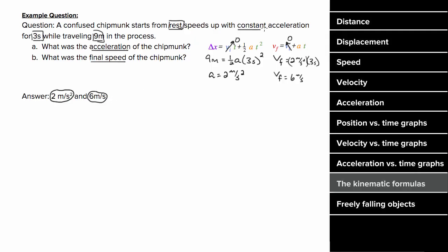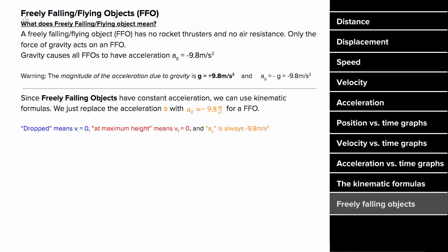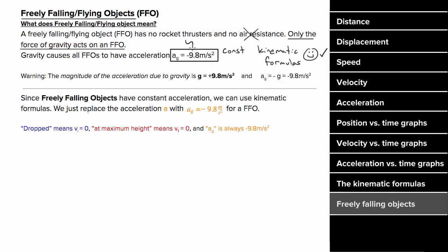A freely falling or flying object is any object that has been dropped or thrown through the air with only the force of gravity acting upon it, meaning we typically ignore air resistance unless otherwise stated. We care about these objects because the acceleration in the vertical direction for all freely falling and flying objects near the earth will be negative 9.8 meters per second squared. Since this acceleration is constant, we can use the kinematic formulas, plugging negative 9.8 in for the vertical acceleration. Watch out for code words: 'dropped' means initial velocity is zero, and the final velocity at maximum height will be zero.